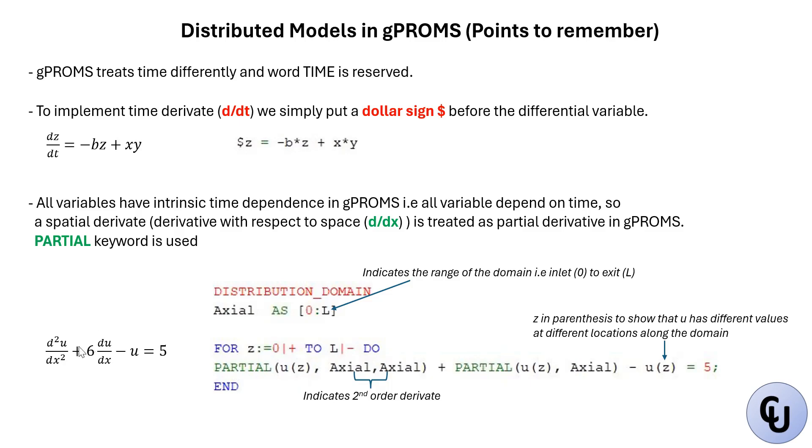Apologies, there's an error here. This should be six. There should be six here. Six times partial u, z, axial, minus u, z equals five. That is how to write the equation in gPROMS.